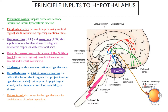There is also retinal input. There are direct connections from the retina to the hypothalamus — to the suprachiasmatic nucleus — and this regulates circadian rhythm, governing how we fall asleep and when we wake up. In summary, there are many different areas of the brain that send inputs to the hypothalamus, and because it's a homeostatic center, it's not surprising that it takes information from a ton of different areas across the brain.